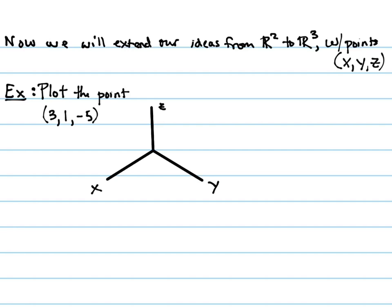We're looking at plotting the point 3, 1, negative 5. To plot the X value of 3, we make hash marks 3 out. Then we go 1 in the direction of Y, parallel to the X axis — it's like moving out 1 from the location you were, creating a sort of parallelogram shape. Then from there, our Z value is negative 5, so we count down 5.